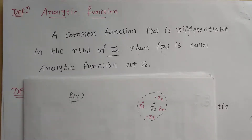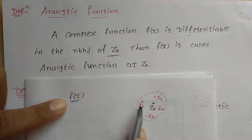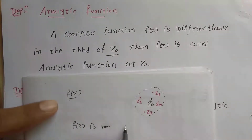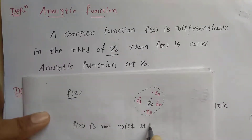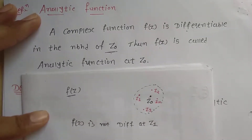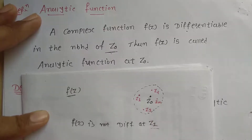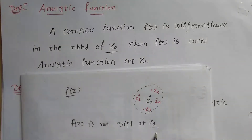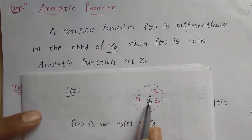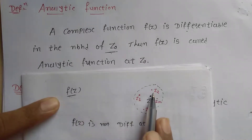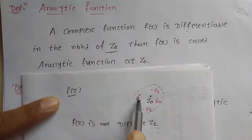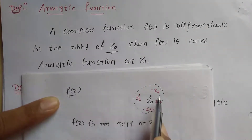If f(z) is not differentiable at z1 — suppose f(z) is not differentiable at z1, which is in the neighborhood of z0 — then at that one point z1 the function is not differentiable. We cannot say the function is analytic at z0, because differentiability must hold at every point in the neighborhood.